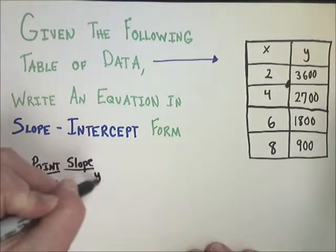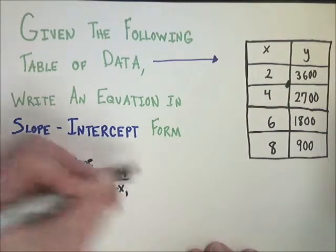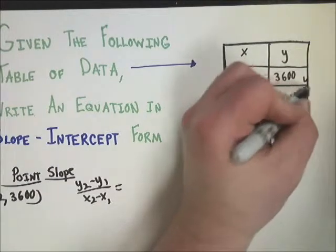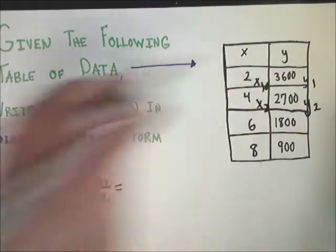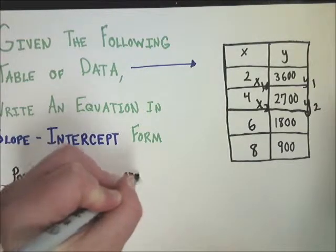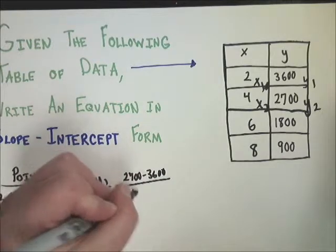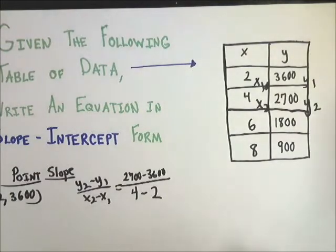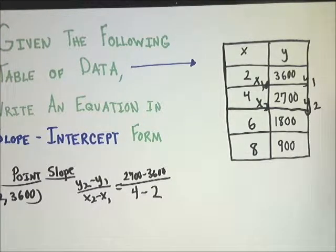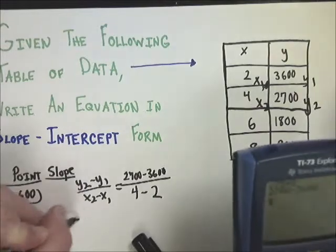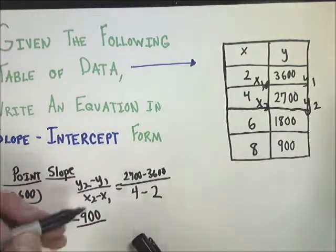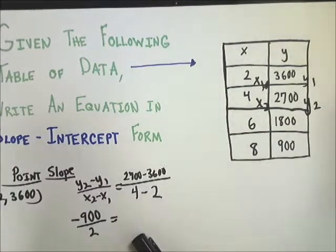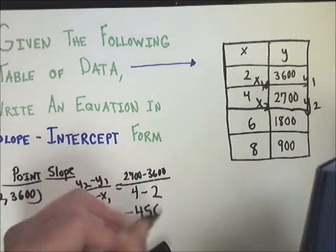My point that I'm going to use is 2 and 3,600. My slope I have to figure out. So I do the formula. Y sub 2. And I can do y, y, x, x. 2,700 minus 3,600. 4 minus 2. The nice thing about this is that the x's are on top of each other, and so are the y's. That's kind of a nice little treat from the norm, I guess. So 2,700 minus 3,600 is negative 900. So negative 900. And then 4 minus 2 is 2. So my final slope would be negative 450. So that's my slope.